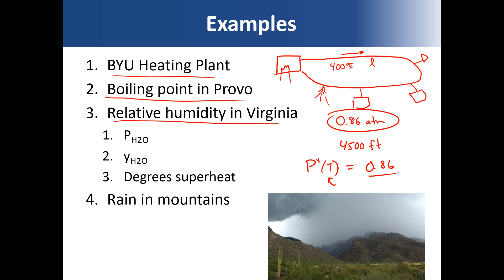Another example: relative humidity in Virginia at sea level. We can calculate the partial pressure of water, the mole fraction of water, and the degrees superheat — how many degrees you'd need to cool the air to see the first drop of dew in the morning. Additionally, rain in the mountains occurs because at higher elevations you have lower temperatures; as clouds are thrust up and pressure decreases, more condensation occurs, which is why mountain areas get more rain.